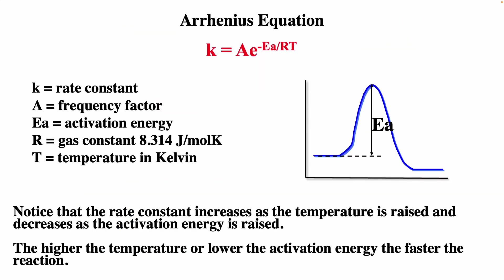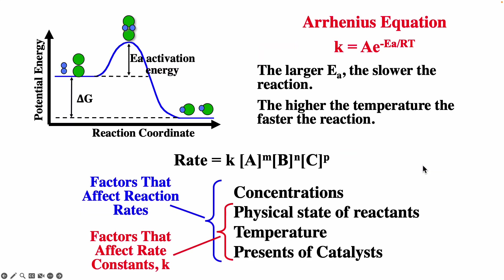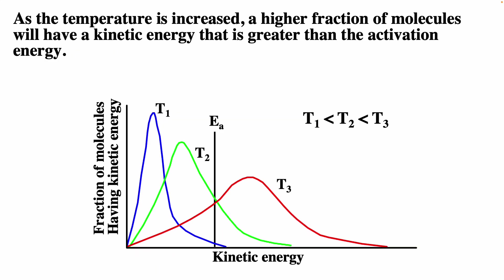For the Arrhenius equation, if we're looking at the forward reaction, all that matters is the activation energy and how hard it is to overcome that — it doesn't matter if it's an exothermic or endothermic reaction. The rate of a reaction depends on concentrations, physical state of reactants, temperature, and presence of a catalyst. The rate constant depends only on the physical state of reactants, temperature, and presence of a catalyst — concentrations are there explicitly. As temperature is increased, a higher fraction of molecules will have kinetic energy greater than the activation energy.